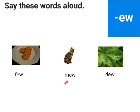Few, new, dew. All these words end with '-ew' and they all belong to the '-ew' family. Now let's say these words again and understand what they mean. Few means less — like in this picture, there are few biscuits. The next word is mew — the sound that a cat makes is called mew. The next word is dew — the water that settles on an object is called dew. Let's say these words one more time: few, mew, dew.